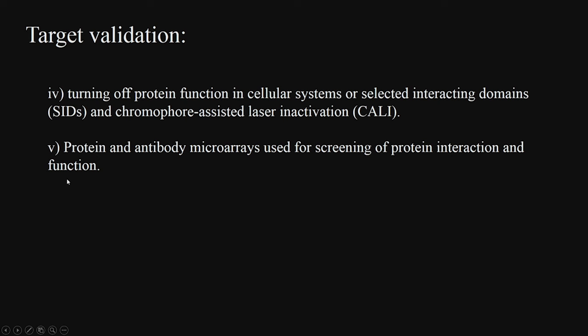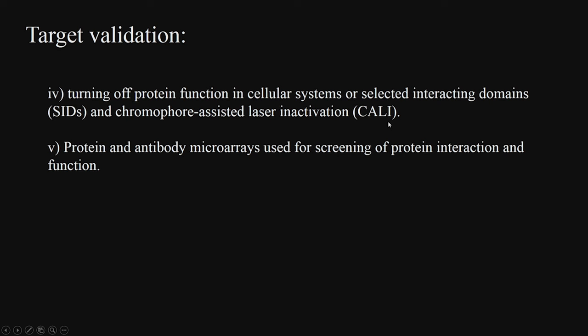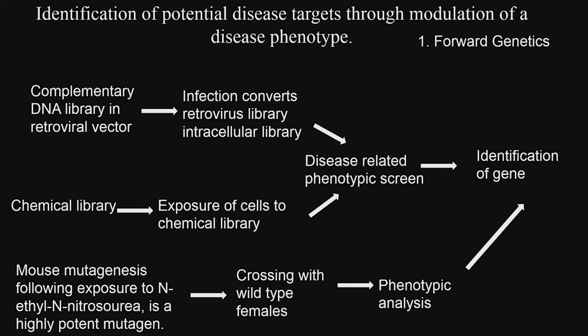Large numbers of approaches are available for target validation. First you identify the target. Then you have to be very sure it is your target of interest. The approaches include: knocking out the gene which stops protein production; silencing protein expression; producing antibodies that bind specifically to that protein making it unavailable; turning off the protein function by external techniques; and looking at large numbers of microarrays to get protein-antibody interactions to validate the target.